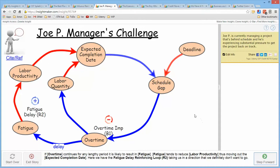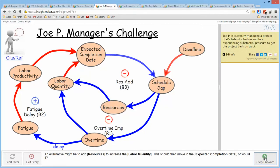And then I ask myself, what else could be influenced by schedule gap? And I say that I could go ahead and add resources, which would add to the labor quantity, which would then reduce the completion date and reduce the schedule gap. So here I have another balancing loop.